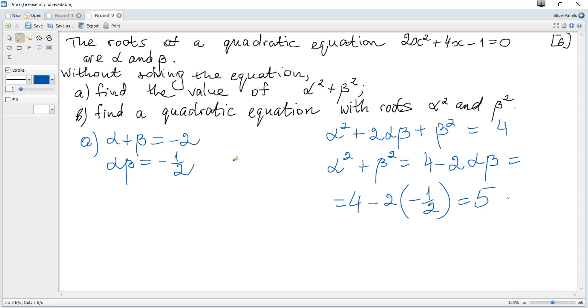Next, find a quadratic equation with roots α² and β². Let the required equation be x² + mx + n = 0. Applying sum and product rules, the sum of roots is -m and the product is n. Since the roots are α² and β², their sum equals 5, so m = -5.